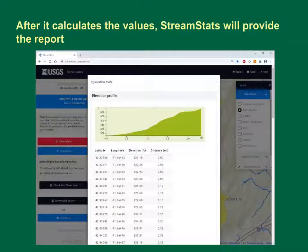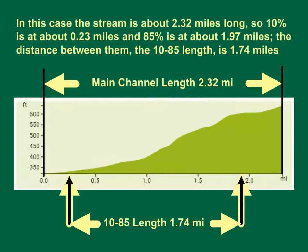Double-click the last point to calculate the values. After it calculates, StreamStats will provide the elevation profile report. In this case, the stream is about 2.32 miles long, so the 10% point is at about 0.23 miles and the 85% point is at about 1.97 miles. The distance between them, the 1085 length, is 1.74 miles.